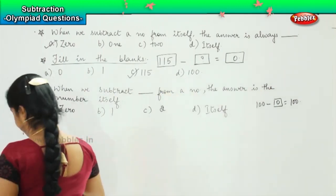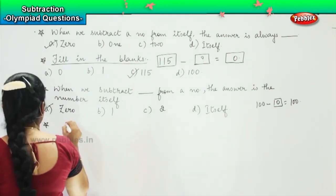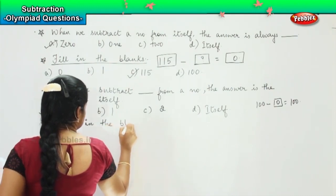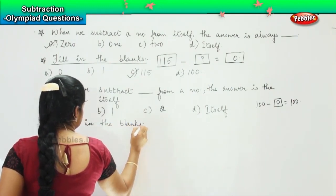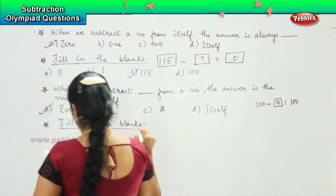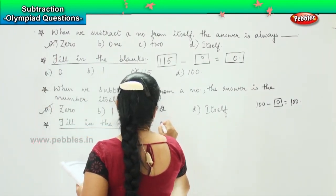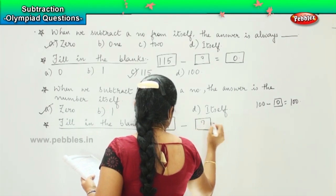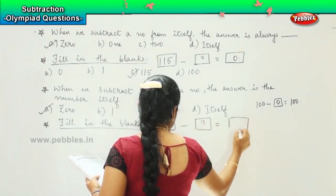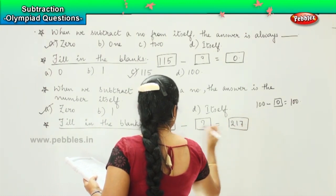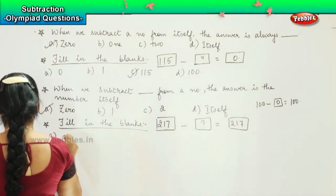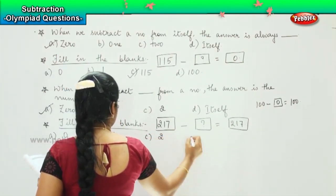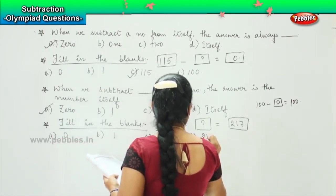So the next question is, filling the blanks. And the question is, 217 minus something is equals to 217. Okay. And your options are a) 0, b) 1, c) 2, and d) 217.